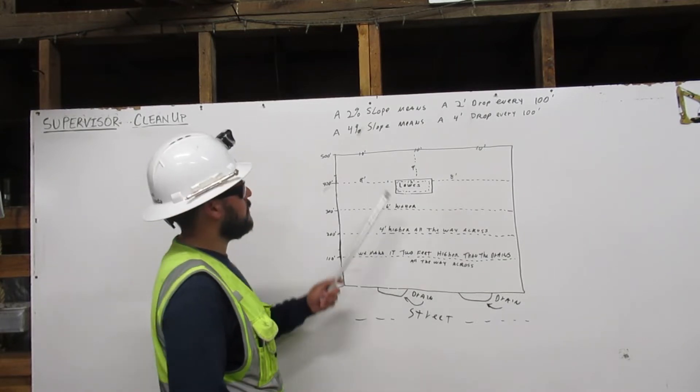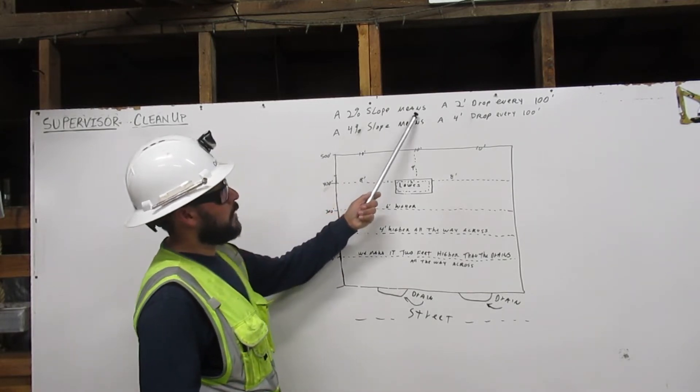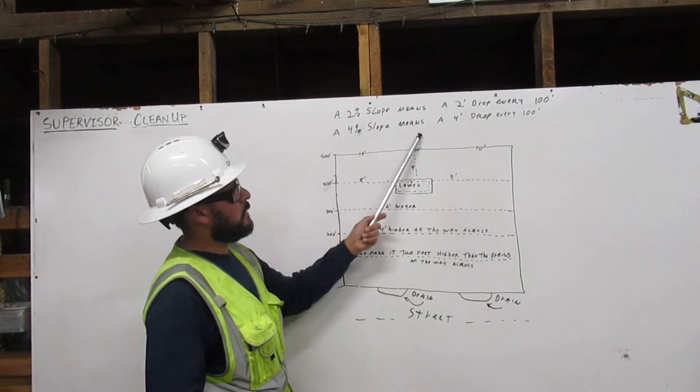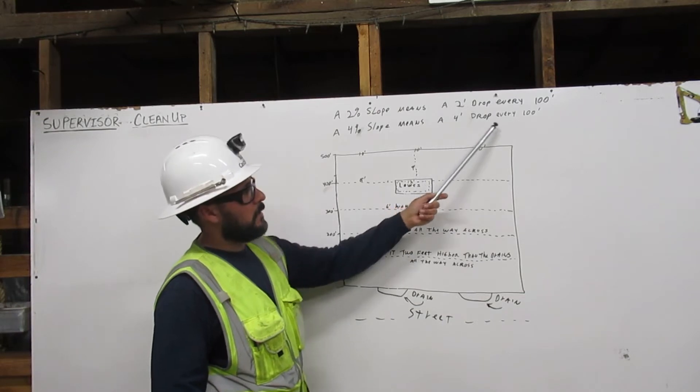Let me show you. A 2% slope means a 2 foot drop every 100 feet. A 4% slope means a 4 foot drop every 100 feet.